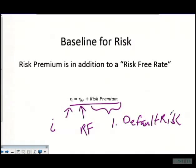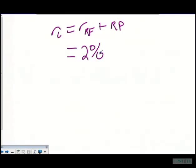The example we're going to use is a case where ri equals r sub rf plus our risk premium. We have a risk-free rate of 1.95%, which is a 10-year U.S. Treasury, so we're going to use this as basically being a 2% risk-free rate.